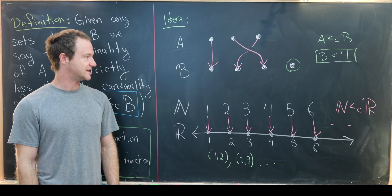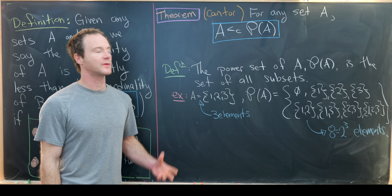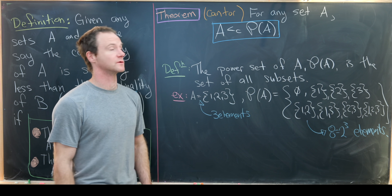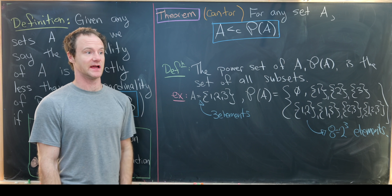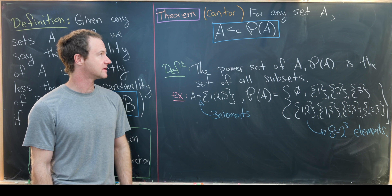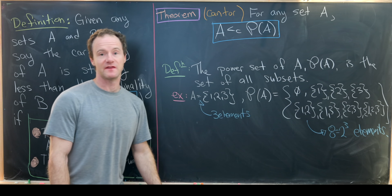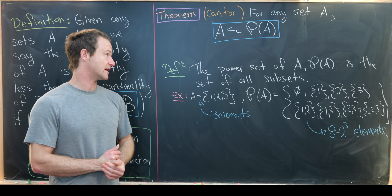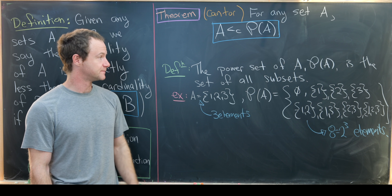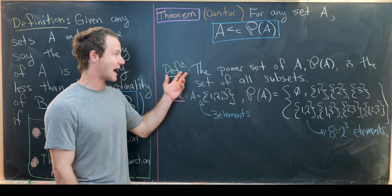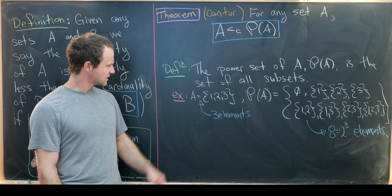Now that we've recalled these definitions, let's get our big theorem on the board. The main theorem we want to prove is from Cantor, and it says that for any set A — finite or infinite — the size of A is strictly less than the size of the power set of A. Let's recall what the power set is: given a set A, the power set is the set of all subsets of A.